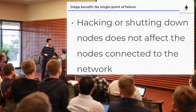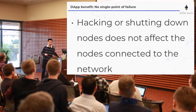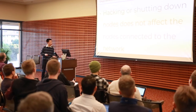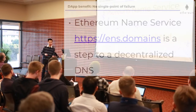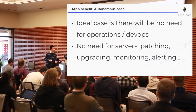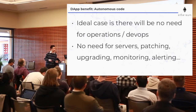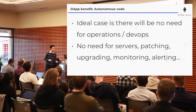There's no single point of failure — hacking or shutting down nodes does not affect the rest of the network. To shut it down, you'd have to shut down every single node. The Ethereum Name Service is a step toward a decentralized DNS. And autonomous code — once you've deployed your code, it's always there. AWS is not really 'the cloud' because it's controlled by Amazon. Ideally, there's no need for DevOps: once you deploy to this peer-to-peer network, it just runs — no servers, no patching, no upgrading, monitoring, or alerting.